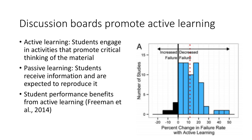Freeman and colleagues examined 225 studies comparing active learning to passive learning in college courses. They found that on average, students learned better with active learning. Looking at the graph, the active learning studies where fewer students failed are in blue, and where more students failed are in black.